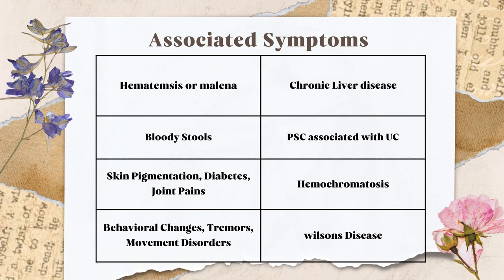If the patient has a history of bloody stools currently or in the past, and they have been receiving treatment for it alongside jaundice, that might be a case of primary sclerosing cholangitis, which is usually associated with ulcerative colitis. If there is skin pigmentation, history of diabetes, and joint pains — especially carpometacarpal joint and knee joint (pseudo-gout) — that might be a case of hemochromatosis.